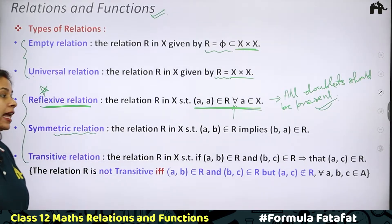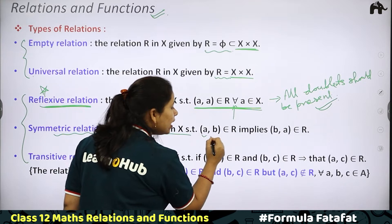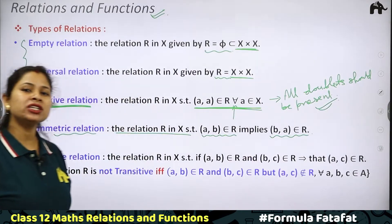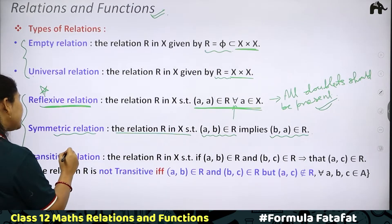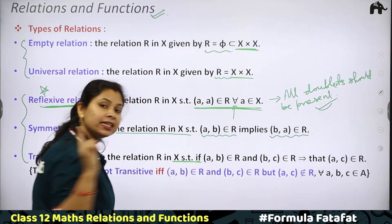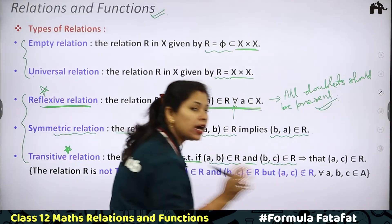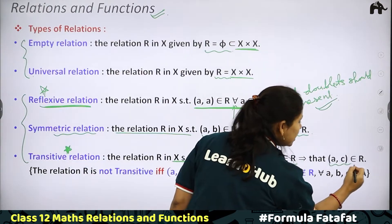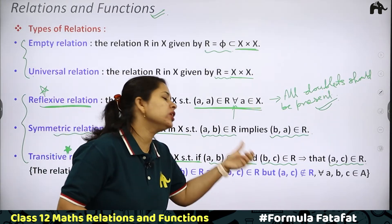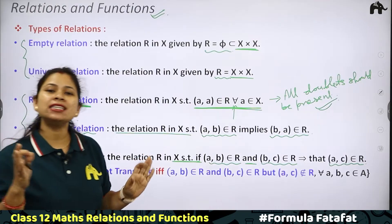Now let's go to Symmetric. Symmetric means related to symmetricity. Now if we talk about Transitive, it is very important because students get very confused. Remember that the relation R in X is such that if (A, B) belongs to R and (B, C) belongs to R, then it should imply that (A, C) belongs to R. When one of these conditions is not met, we don't need to check A, C — the relation still passes the transitive check.